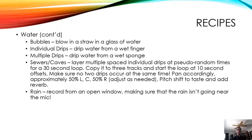For individual drips, get a glass, get some water on your finger, and let it drip from a wet finger into the glass and record that. For multiple drips, I recommend using a sponge — you can squeeze out just a little bit at a time and control the flow with your hand. To get the ambient feel of a sewer or a cave, take multiple spaced-out individual drips at pseudo-random times and find a 30-second loop of those. Copy it to multiple tracks and start the loop at 10-second offsets, making sure no two drips occur simultaneously. Pan accordingly to get 50% left, center, 50% right. Add a little pitch shifting to taste and add global reverb — you can either put it in a group, add reverb, and bounce it, or put it on the master and bounce everything down.